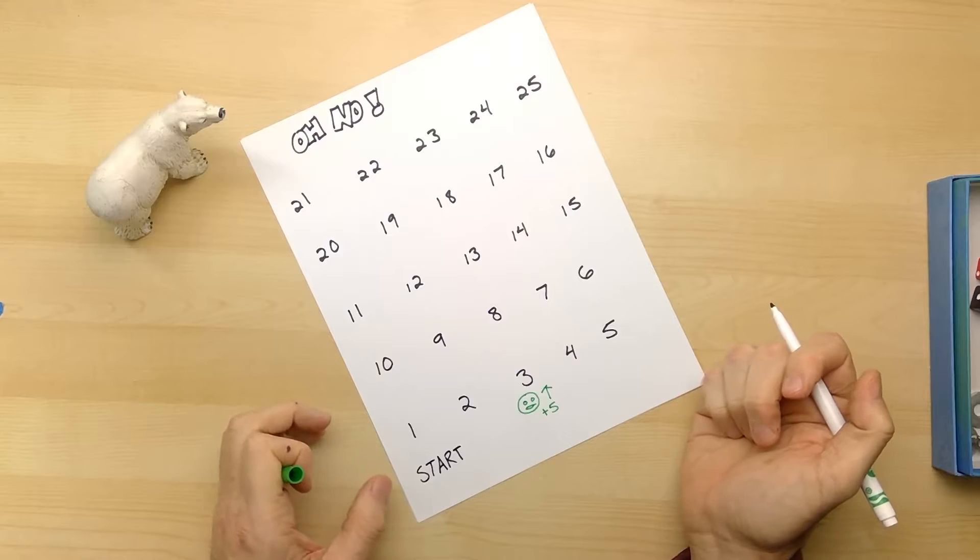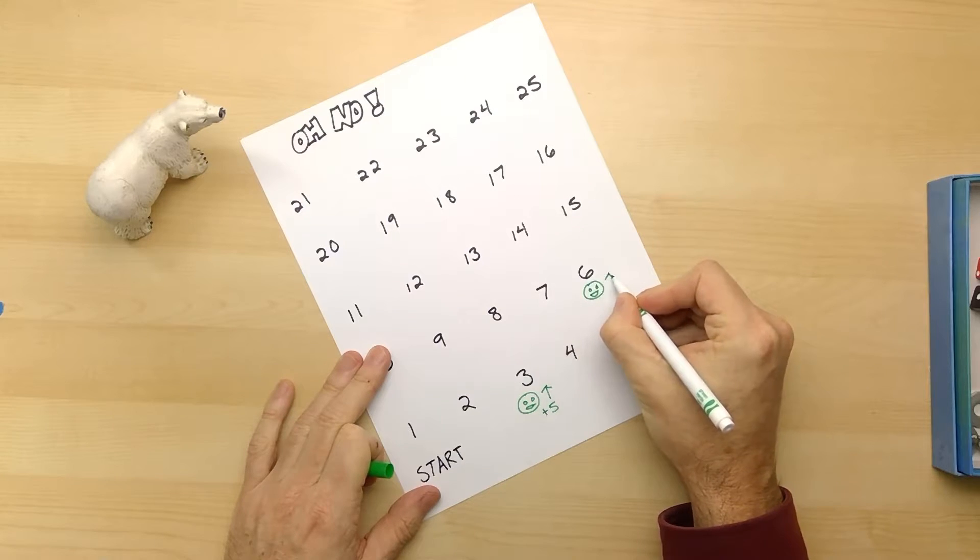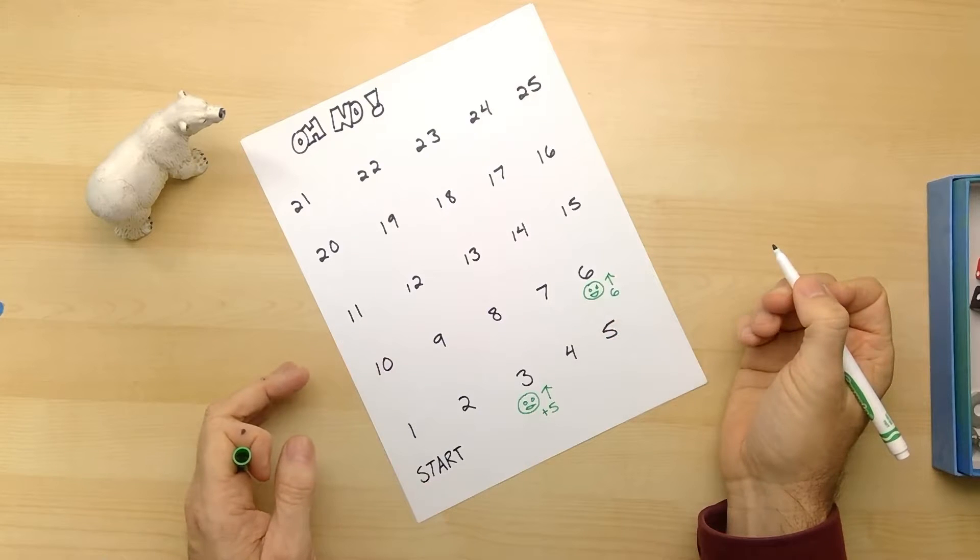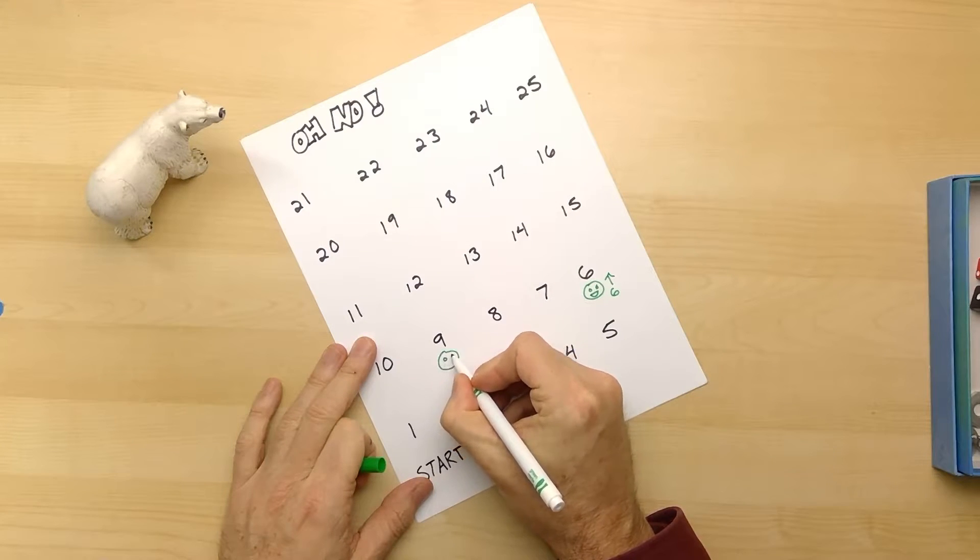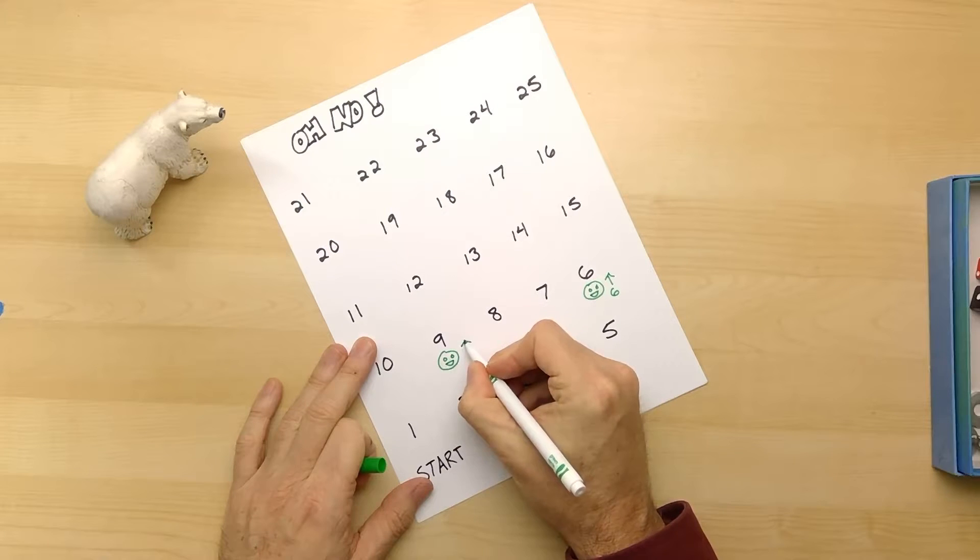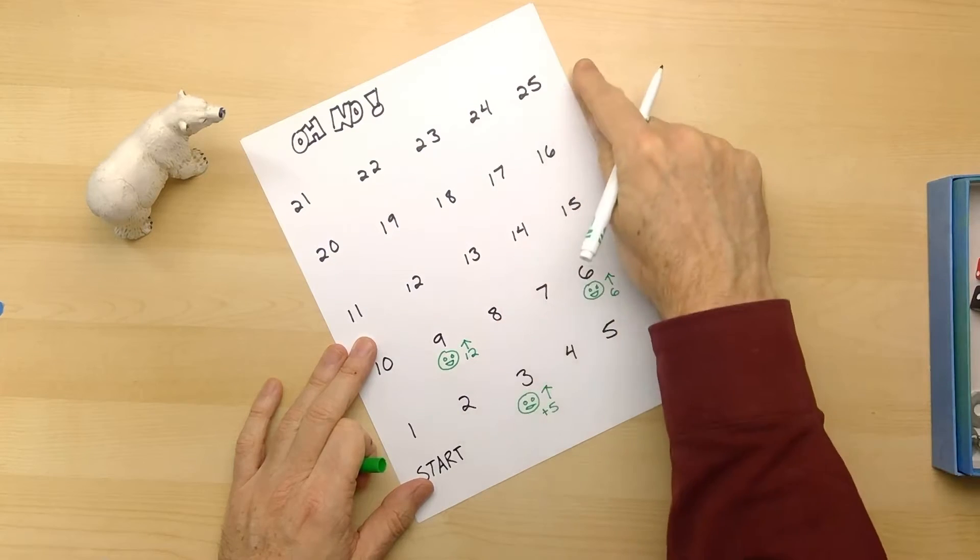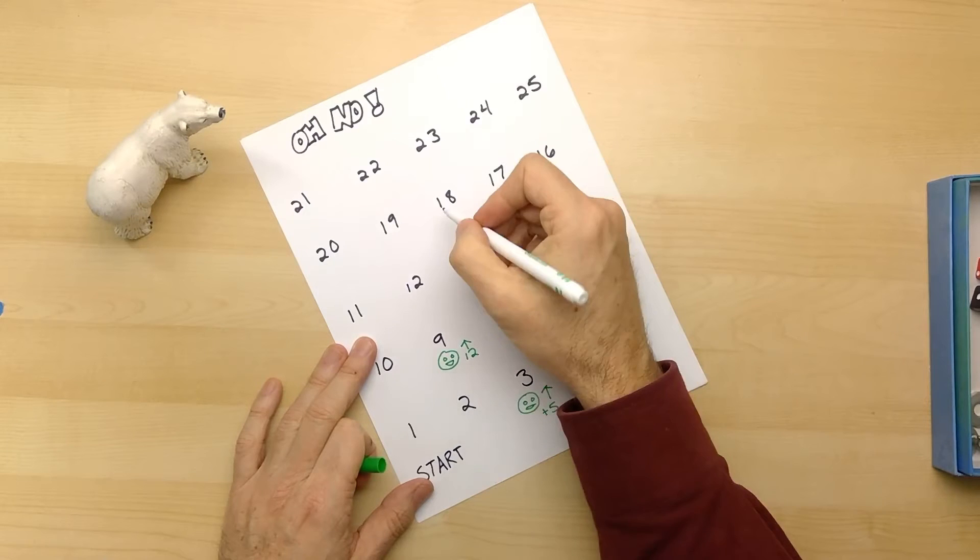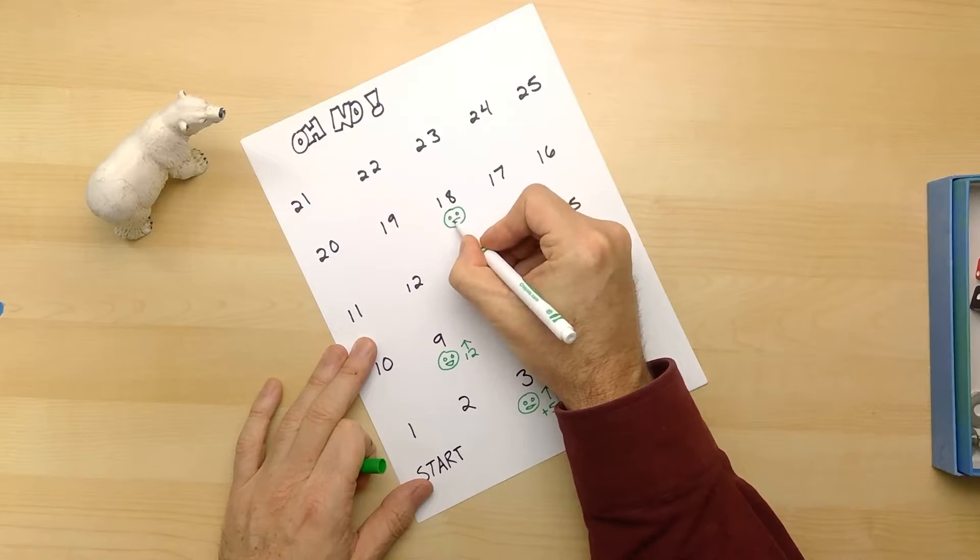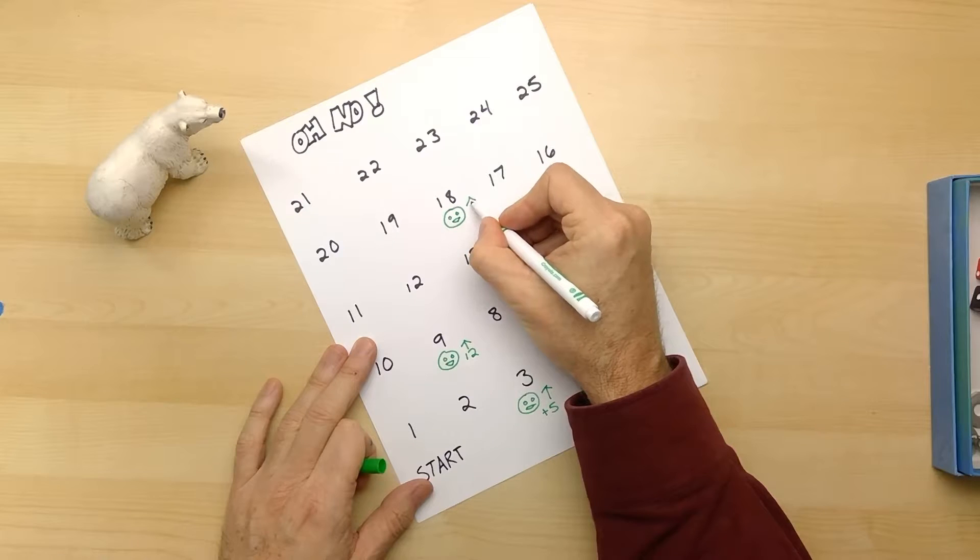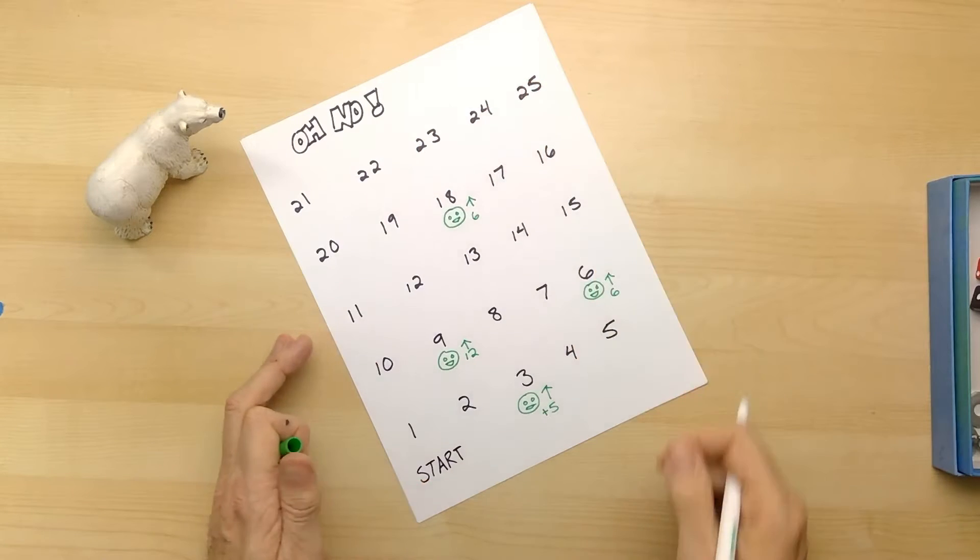Let's put some more other happy places on here. How about if we get to the number six, we get to go up by six more? That's great. What if we get to the number nine, and we get to go up by, oh what if we say we get to go up by 12 more? Now we have to be careful, we don't want to make so many that we go off the board, but this is a good number. And maybe up here under 18 we put down you go up by six more - one, two, three, four, five, six, almost to the end. That's wonderful. Okay, those are all happy places.